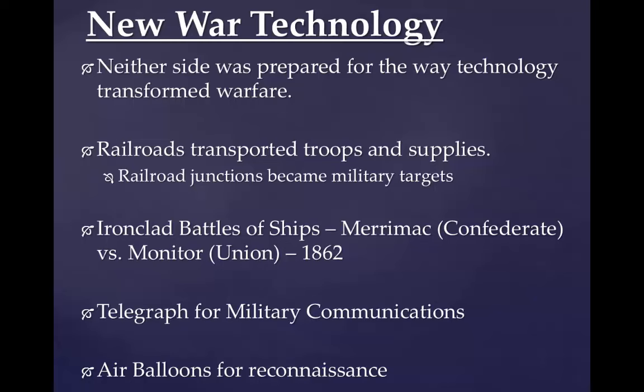Railroads were going to be majorly important for transporting troops and supplies, and railroad junctions became military targets needing defense. You also had the first ironclad battleships, with the famous battle between the Merrimack and the Monitor in 1862. These ironclad ships were essentially retrofitted wooden ships with armor added — much like a knight in medieval times wearing armor — which slowed them down but allowed them to take much larger hits from the big guns.